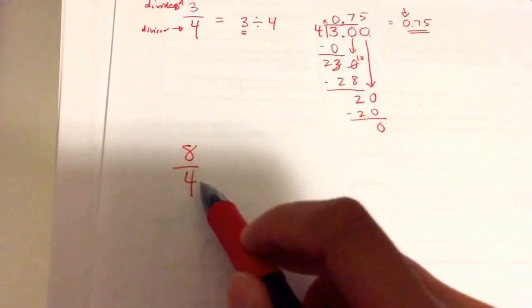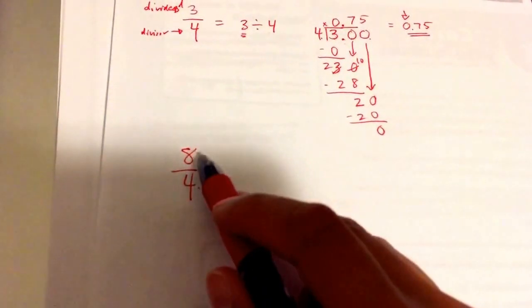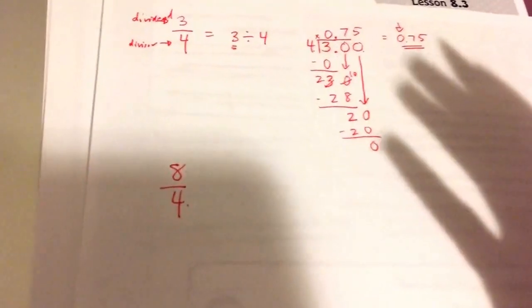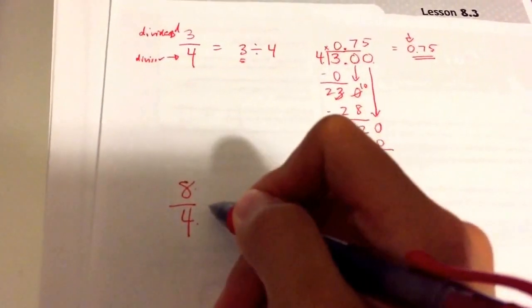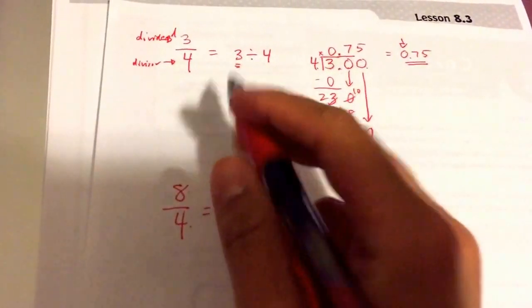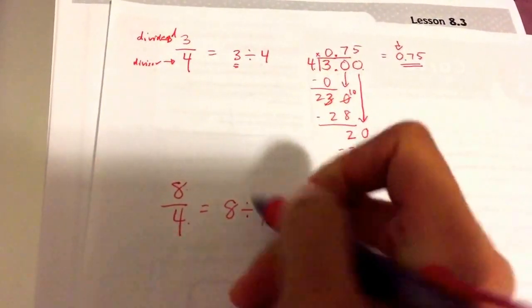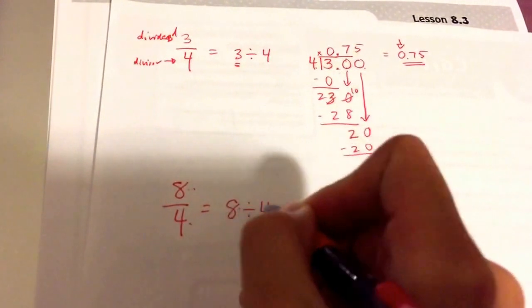If we do 8 over 4, we know that the numerator is bigger than the denominator, so our answer is going to be larger than 1. And we don't know how much by, but keep in mind, the numerator goes first, 8, divided by 4. Numerator, denominator, numerator, denominator.